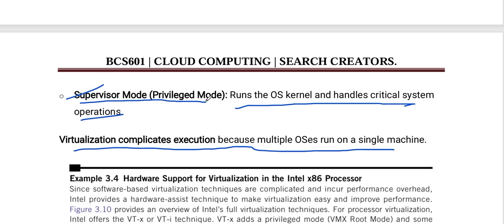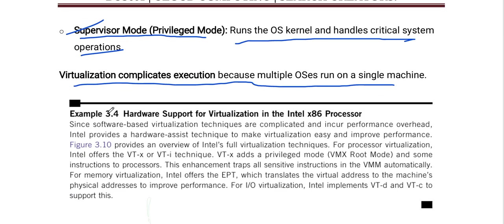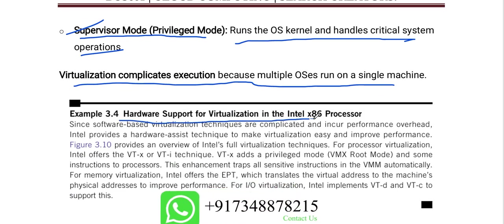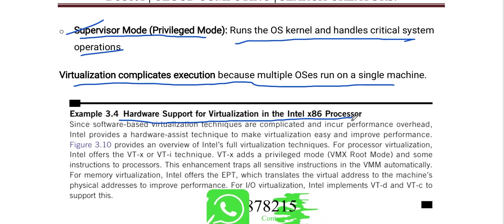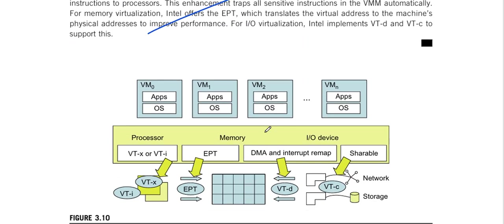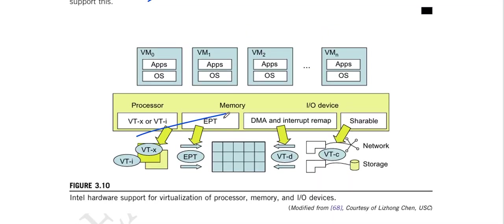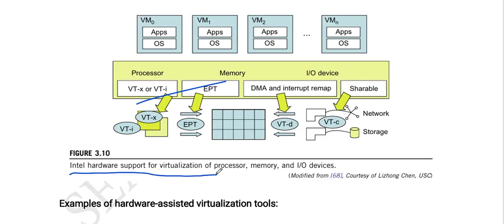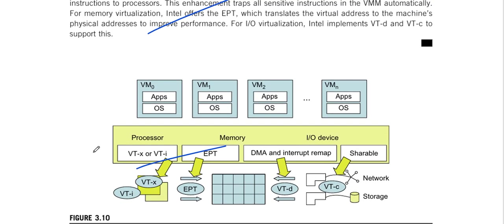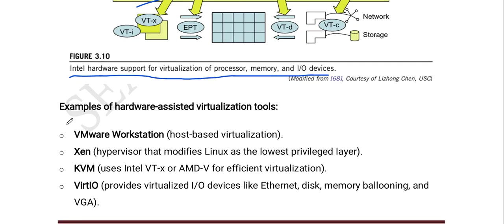When multiple OSes run on a single machine and compilation execution occurs, it causes complexity due to multiple OSes running simultaneously. Next is an example of hardware support for virtualization in the Intel x86 processor. In this figure we can observe the Intel hardware support for virtualization of processor, memory, and I/O devices. Next are examples of hardware-assisted virtualization tools.